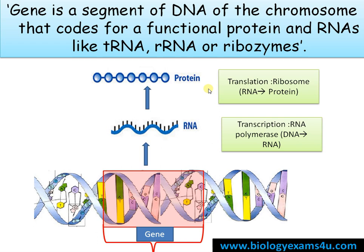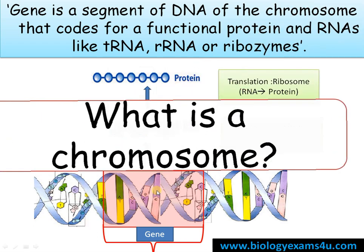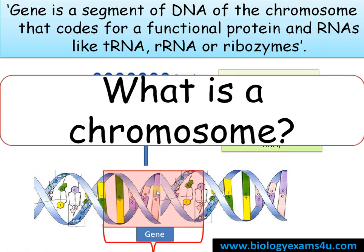Sometimes a gene may code for an RNA, like tRNA, rRNA, or ribozymes. Ribozymes are RNAs with catalytic activity; examples include the spliceosome and peptidyl transferase. So this is what a gene is.